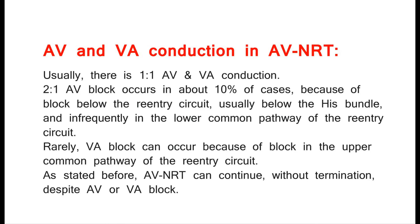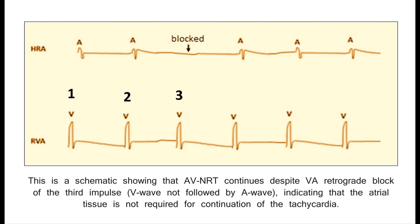AV and VA conduction in AVNRT: usually there is 1:1 AV and VA conduction. 2:1 AV block occurs in about 10% of cases due to block below the re-entry circuit, usually below the His bundle. Rarely, VA block can occur due to block in the upper common pathway of the re-entry circuit. As stated, AVNRT can continue without termination despite AV or VA block. A schematic shows AVNRT continuing despite VA retrograde block of the third impulse — the V wave not followed by an A wave — indicating that atrial tissue is not required for continuation of the tachycardia.